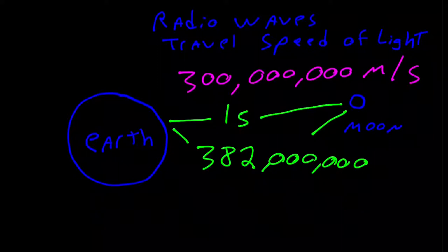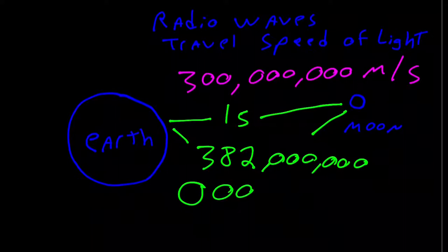To give a little more perspective, the Earth-Moon distance can fit approximately 30 Earths — meaning you could put 30 Earths between the Earth and the Moon.